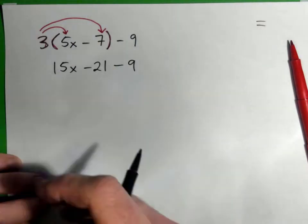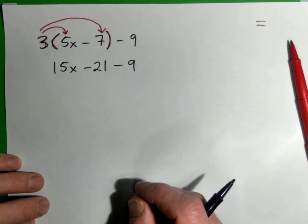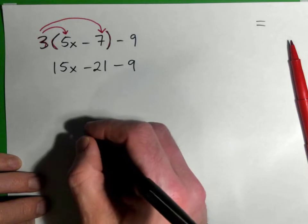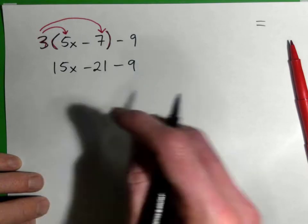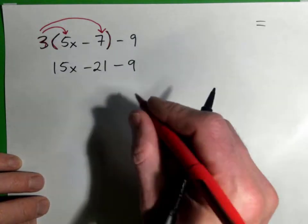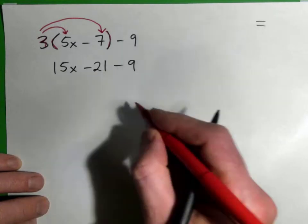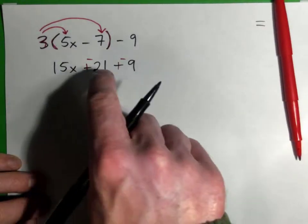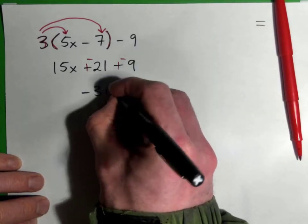Perfect, you can combine these numbers here. Negative 21 and negative 9—you can change subtraction to plus negative. Plus negative 21 and 9 negatives makes 30 negatives.